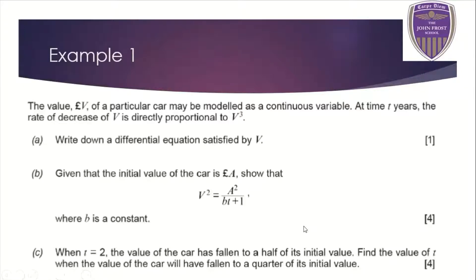Example one — pause the video and have a go, come back when you're ready. The value v is a continuous variable at time t years. The rate of decrease of v is proportional to v cubed. The rate of decrease of v is just the rate of change of v — it's directly proportional to v cubed, and because it's decreasing there's going to be a negative relationship here.